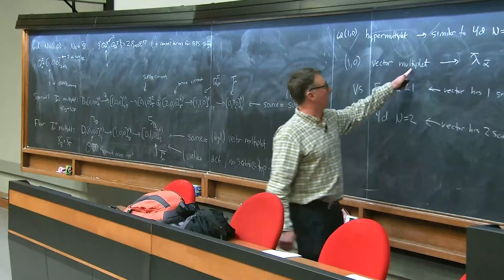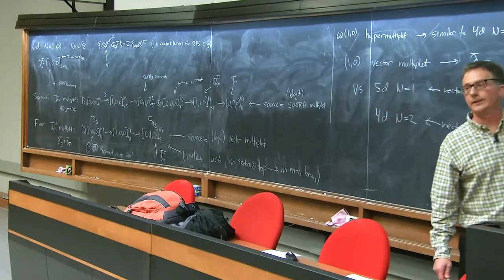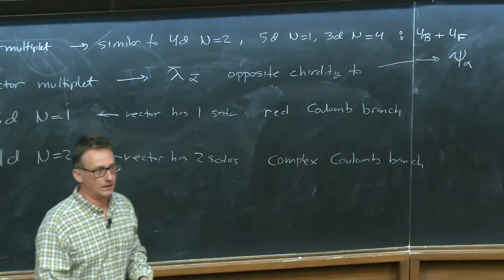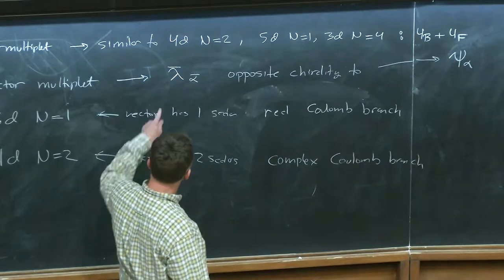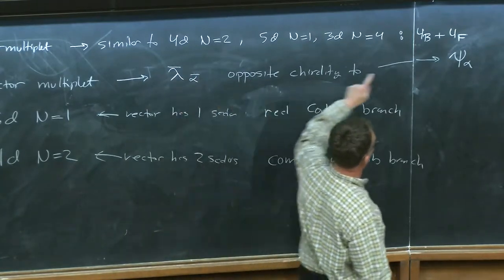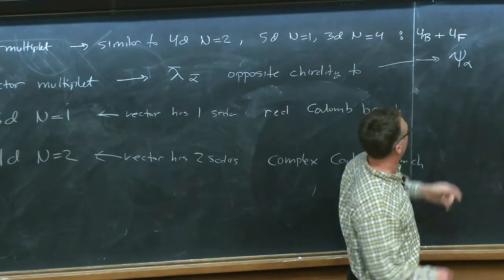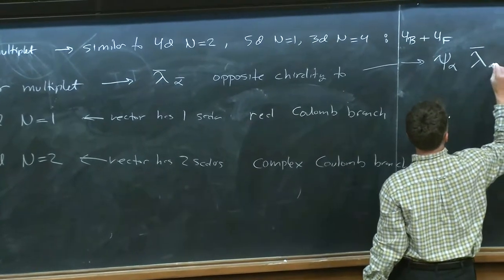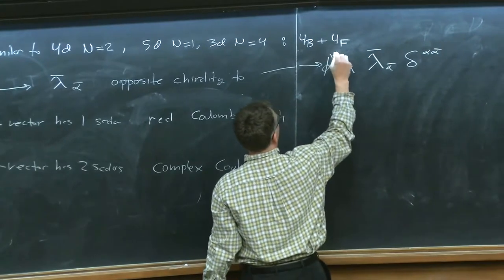In six dimensions there's no Coulomb branch from the vector multiplets, but there is something analogous coming from another multiplet I'll discuss shortly. Another feature of the vector multiplet is that its fermion has opposite chirality to the fermion in the hypermultiplet — that's how they couple. If a charged hypermultiplet gets a mass via a Higgs mechanism, the gaugino can pair up with the fermion via a term like ψ_α λ̄_ᾱ δ_{αᾱ}.